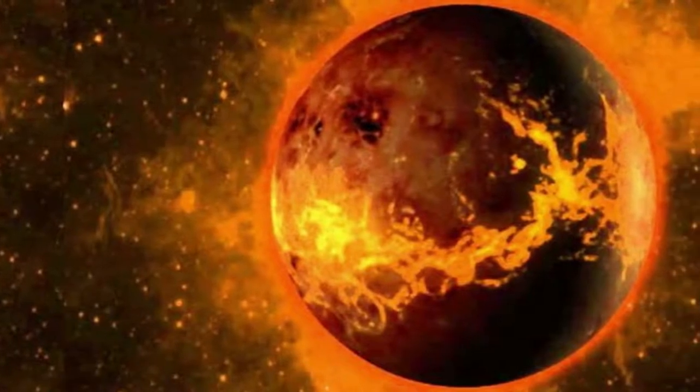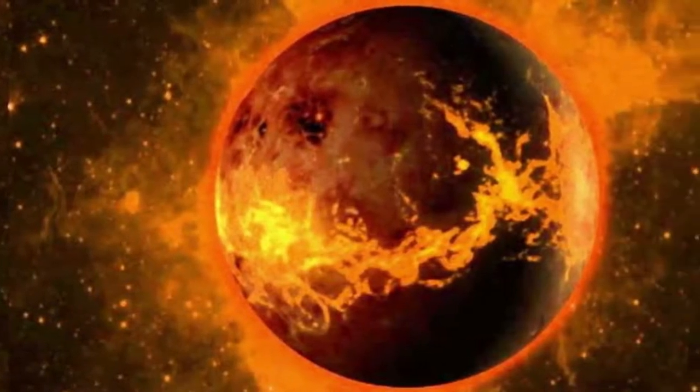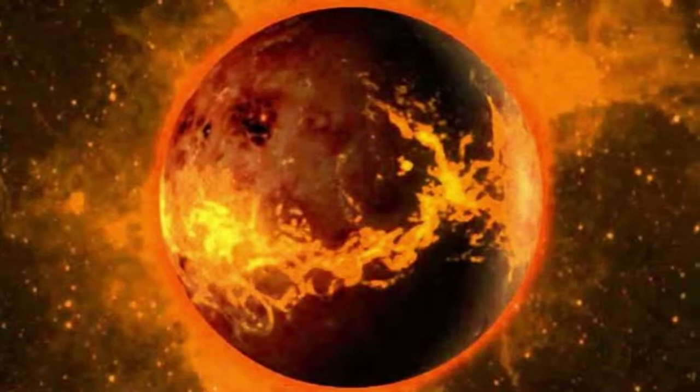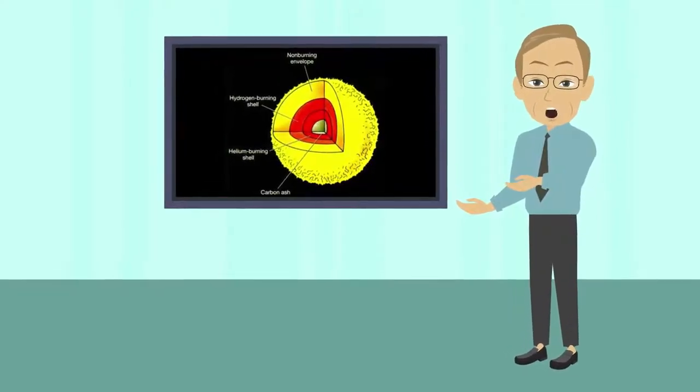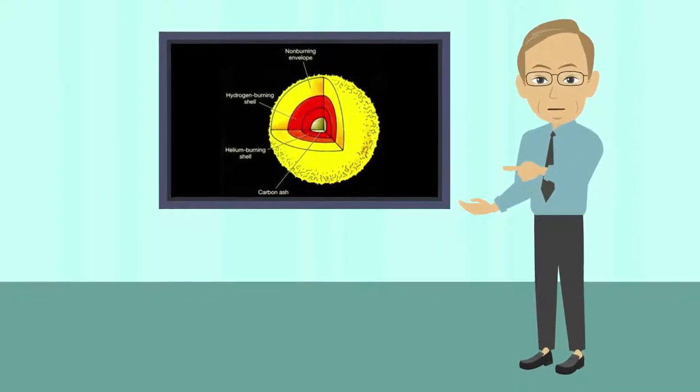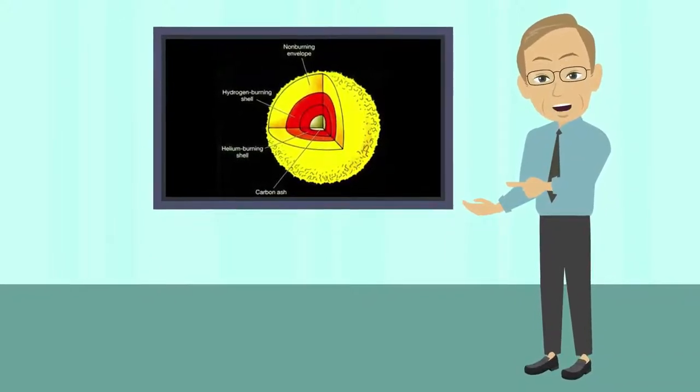That weight can generate enough pressure to fuse the helium as it did with the hydrogen at the beginning of the Sun's life. However, whatever hydrogen is remaining on the core's surface will fuse, generating a little additional energy and allowing the Sun to keep shining.